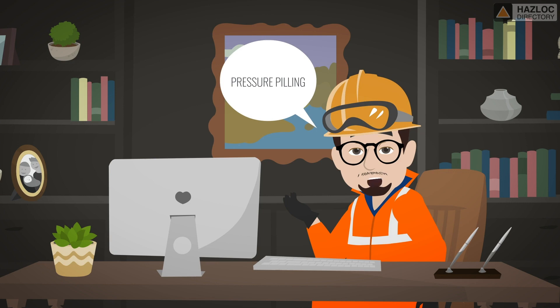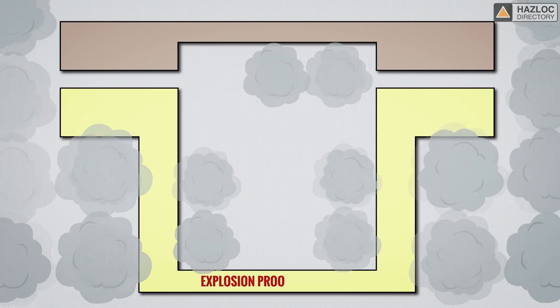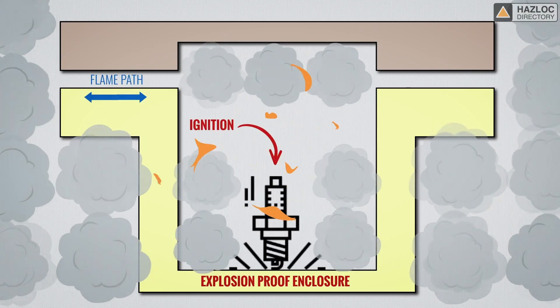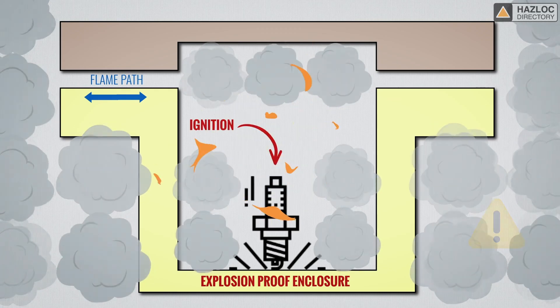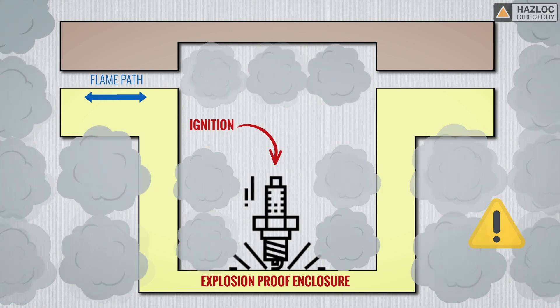You may have heard of the phenomenon called pressure piling, which adds to the severity of an explosion. In this animation, we're going to talk about pressure piling, which can happen when explosion-proof enclosures are not designed and installed properly for use in a hazardous area. The result of pressure piling can lead to a catastrophic event.